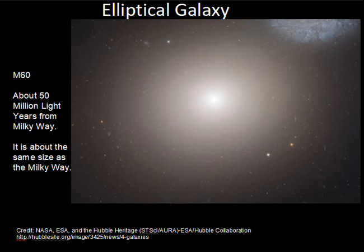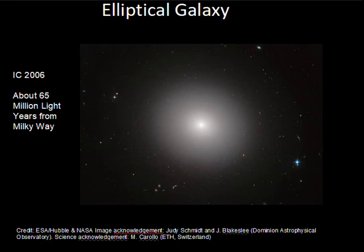This large elliptical galaxy is about 65 million light years from the Milky Way. Another characteristic of elliptical galaxies is that their stars are very old, and there is little cold gas and dust in these galaxies. So they are not currently forming very many new stars. There may be an occasional formation of stars, but it's not a general trend. Most of the stars are very, very old.